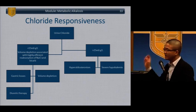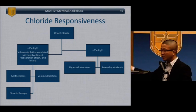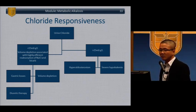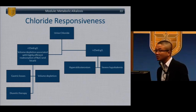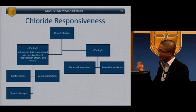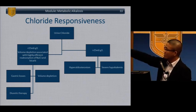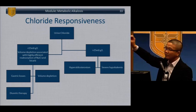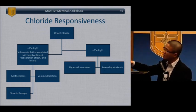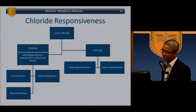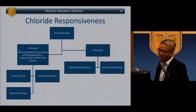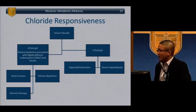Chloride-responsiveness: if urine chloride is less than 15 mEq/L, you're looking at volume depletion, associated with highly efficient reabsorption of sodium, chloride, and bicarb — what aldosterone is trying to do. Scenarios include gastric losses, dehydration, and diuretic therapy. If urine chloride is greater than 25 mEq/L, you're looking at increased aldosterone activity or severe hypokalemia — one reason you can't correct metabolic alkalosis until you correct severe hypokalemia.